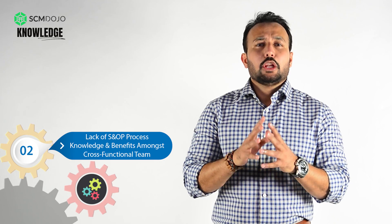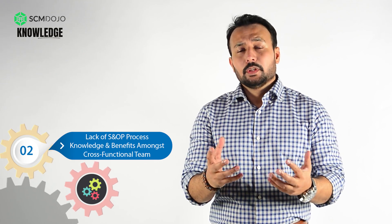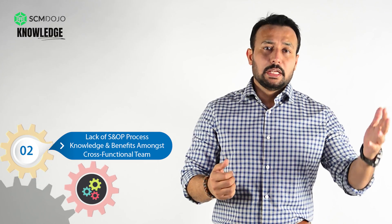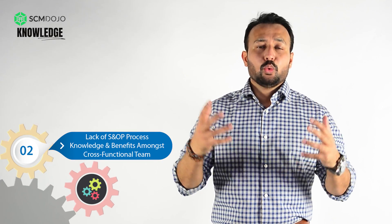Second is lack of S&OP knowledge and its benefits in a cross-functional team. S&OP is essentially a cross-functional process — it helps the sales team, marketing team, finance team, product, manufacturing, and supply chain work together and have one coherent communication plan. But if people are not trained on the right inputs, agenda items, outputs, and what they should expect from the S&OP process, it's just not going to work. My strong recommendation is to give them an overview and the benefits of S&OP before you embark on the journey.